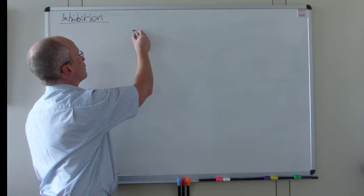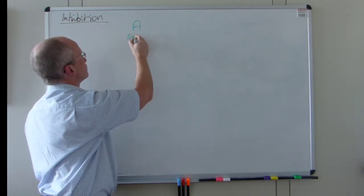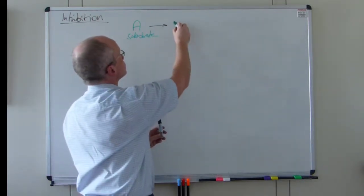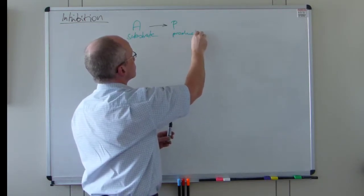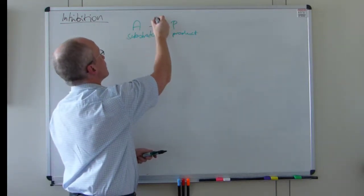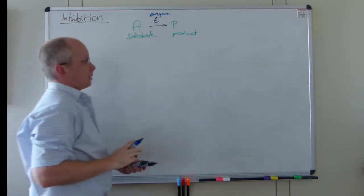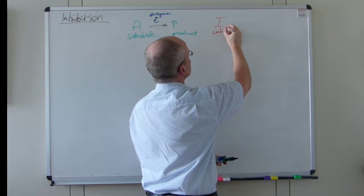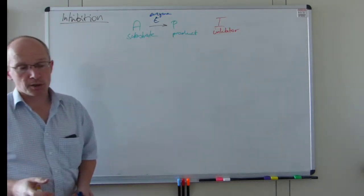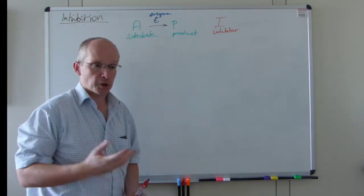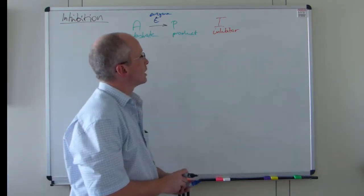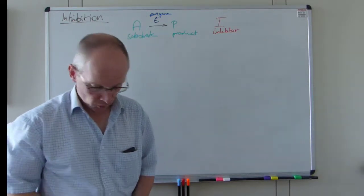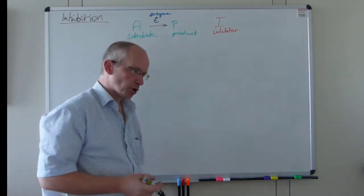Generally we have the common setup of a substrate being converted to the product, and in this context this is of course done by an enzyme. There is also an inhibitor — this is typically the bad guy preventing the actual catalytic action. With increasing concentration of inhibitor there will be a decrease in catalytic activity. This can translate to multiple different mechanisms.